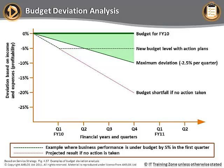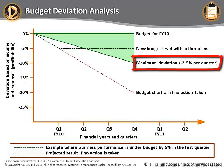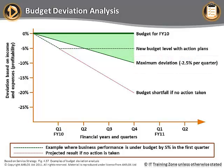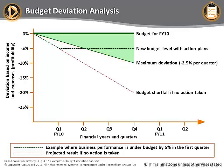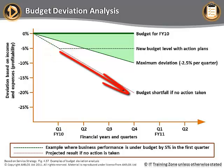In this example, the threshold has been set at minus 2.5%. Notice that this is cumulative — the line labeled maximum deviation shows the threshold through the year. If the budget deviation is within the shaded area, then no action needs to be taken. The dashed line shows a budget deviation of minus 5% at quarter 1. This is beyond the threshold of what is acceptable, and action must be taken. The dotted line shows what might happen in the future if no action is taken. The action plan may involve a new budget.